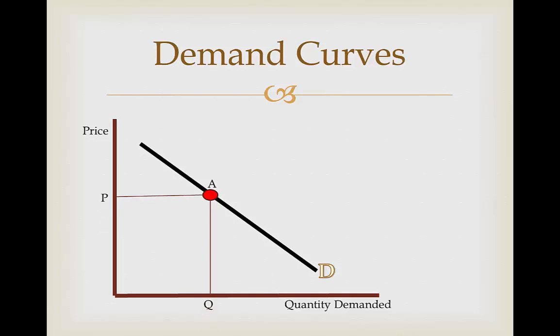This is how we draw points onto our demand curves. We find a point at which we want to see how the price will affect the quantity demanded, or vice versa, and we draw it on and label it point A. We then draw two lines coming off that point onto each axis — P for the price and Q for the quantity demanded.